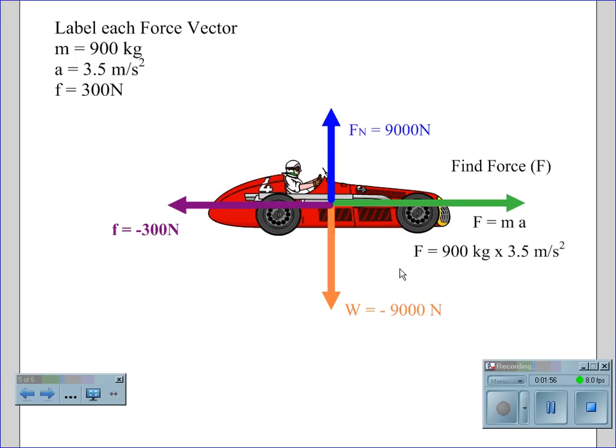Force is found using the 900-kilogram car traveling at an acceleration of 3.5 meters per second squared, which gives us a forward force of 3,150 newtons,